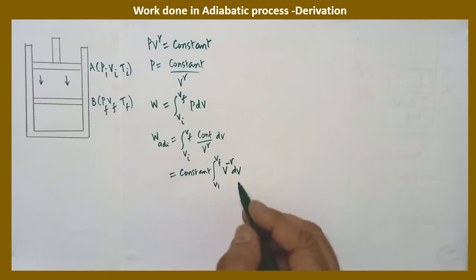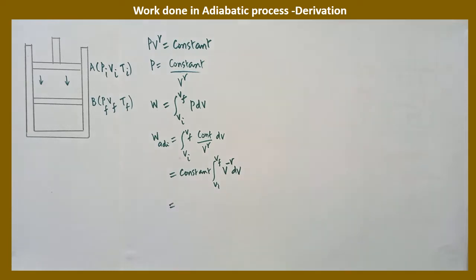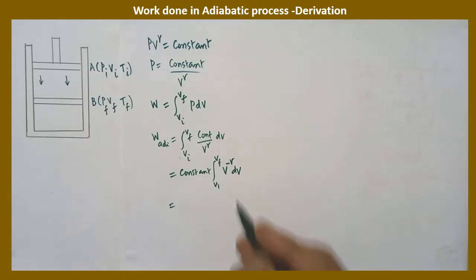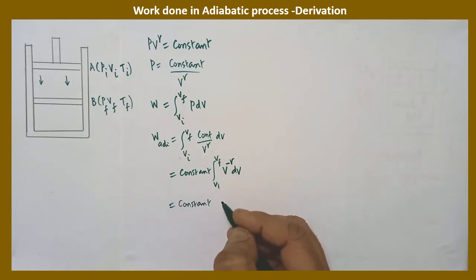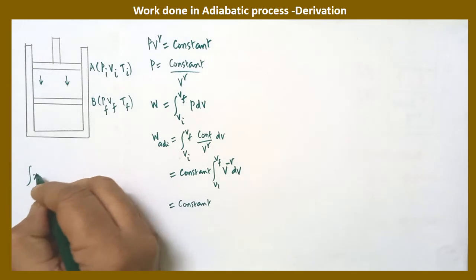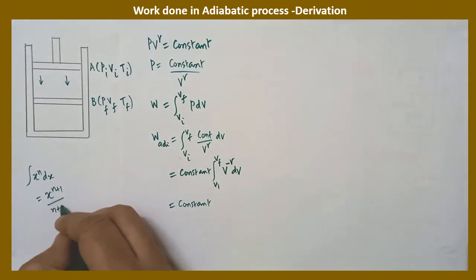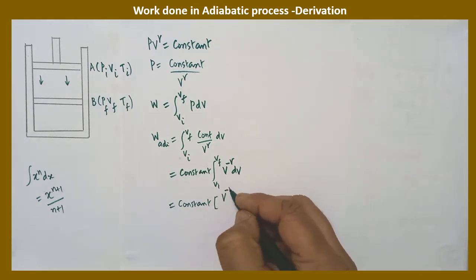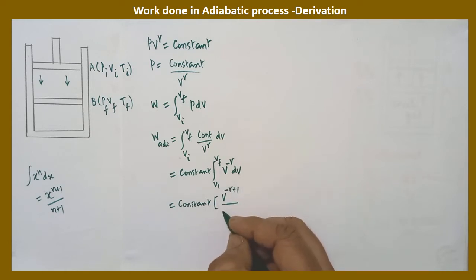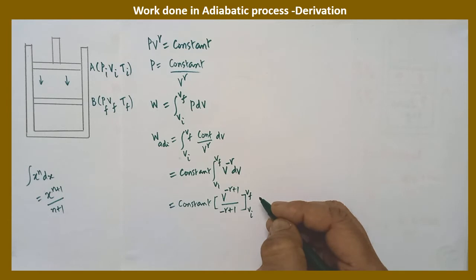Now we integrate this expression. Using the standard formula — integral of x^n dx = x^(n+1) / (n+1) — we apply it here. After integration we get: constant × [V^(−γ+1) / (−γ+1)] evaluated from Vi to Vf. The limits Vi to Vf are to be substituted in the next step.